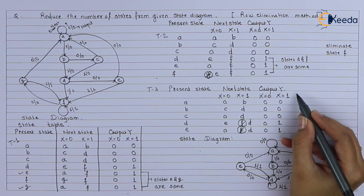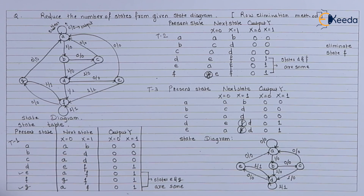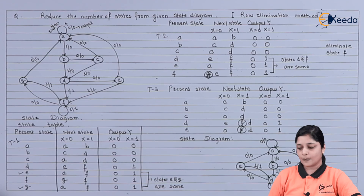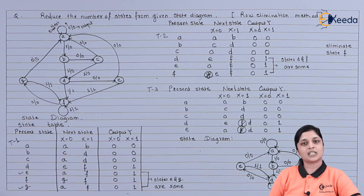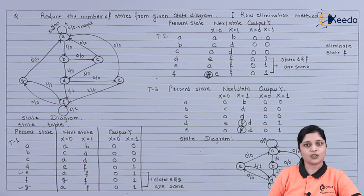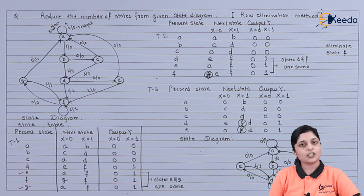Considering all present states, this is the reduced state diagram designed using the row elimination method. You draw the state table first, then apply row elimination, and finally redraw the state diagram from the reduced table. This is all about the numerical based on row elimination method. Thank you for watching. Stay tuned with Ikeda and subscribe to Ikeda.